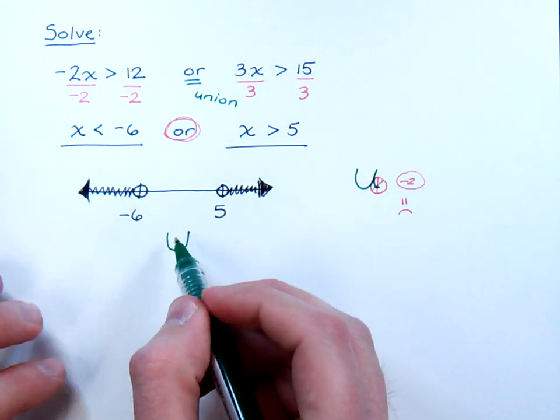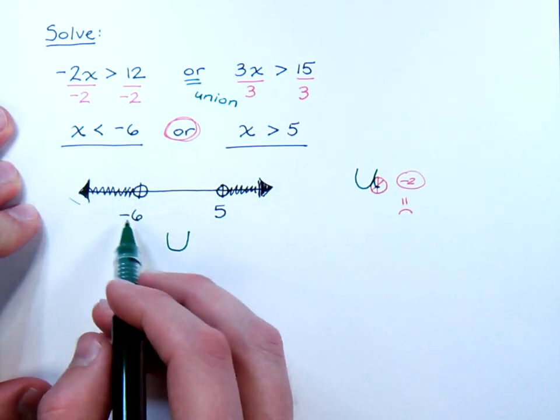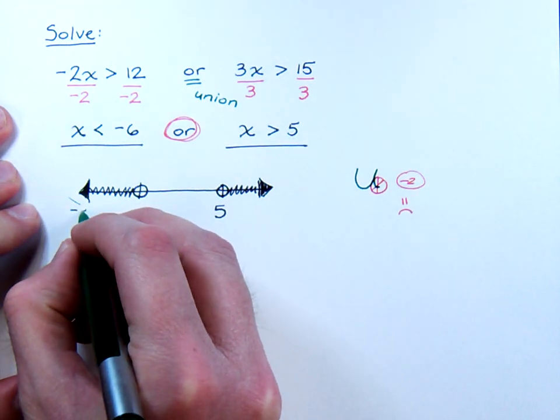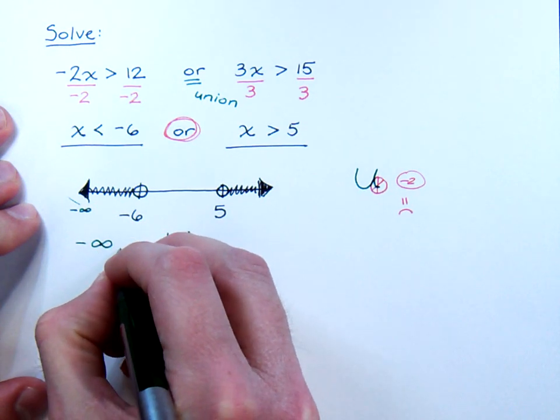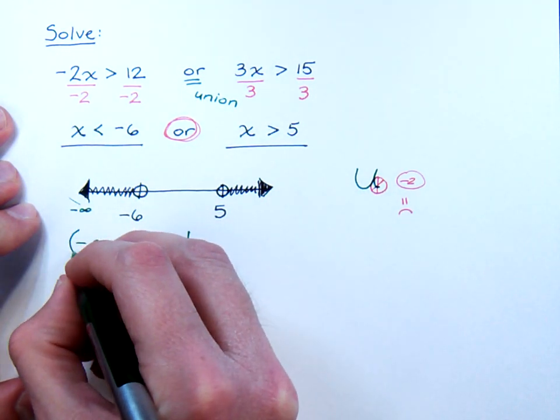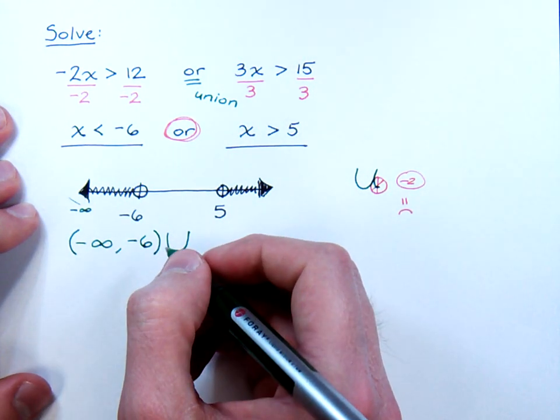So, back to this guy right here. How do I describe the left part of this solution set using interval notation? Well, I'm coming from negative infinity, so negative infinity, it's negative six, using parentheses because I don't have any closed circles, and only a closed circle will let you use a bracket.